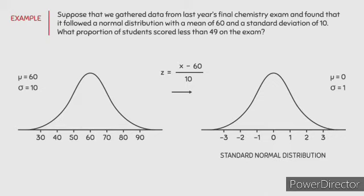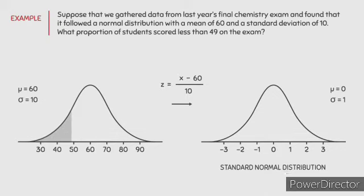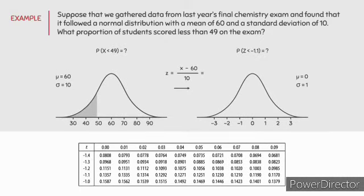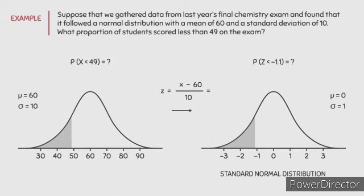If asked what proportion of students scored less than 49 on the exam, we use the standardization formula. The proportion of x less than 49 is unknown until we standardize — plugging 49 into the formula gives a z-score of negative 1.1. We then look for the proportion of z less than negative 1.1. According to the z-score table, there is an area of 0.1357 to the left of this z value. Therefore, the proportion of students who scored less than 49 on the exam is 0.1357.